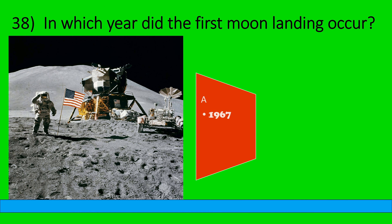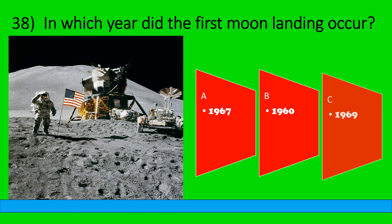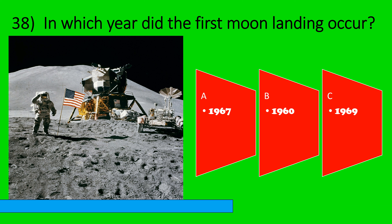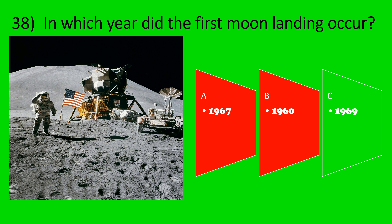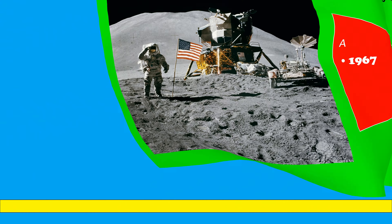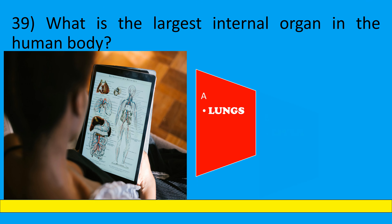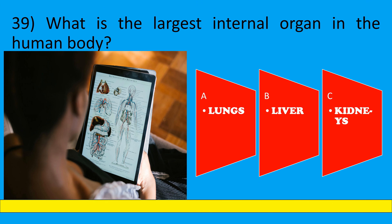In which year did the first moon landing occur? A: 1967, B: 1960, C: 1969. The correct option is C, 1969.